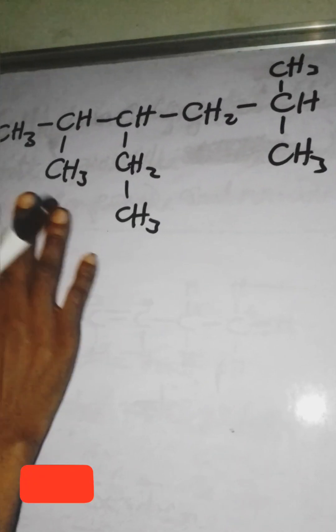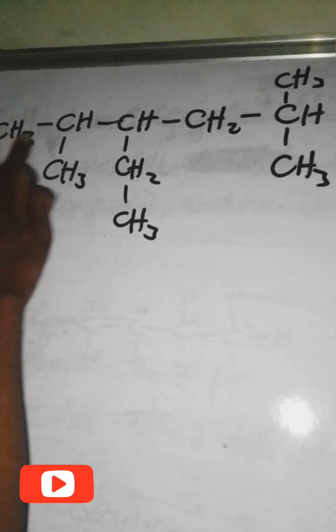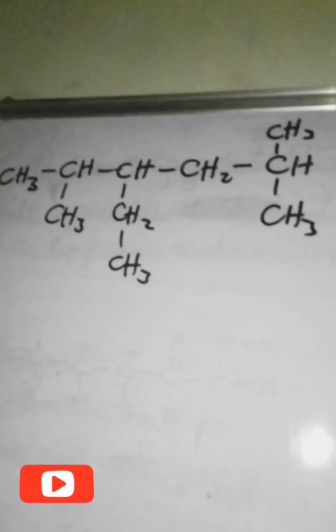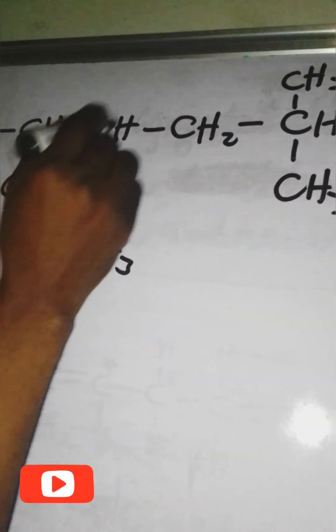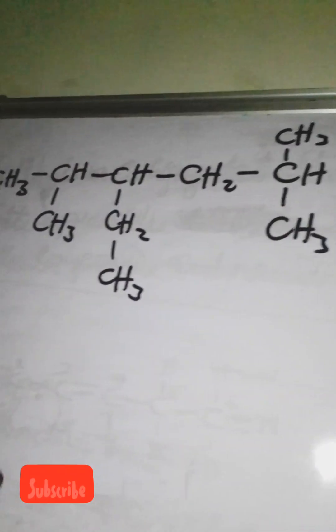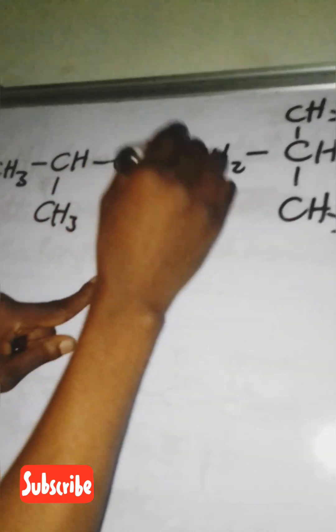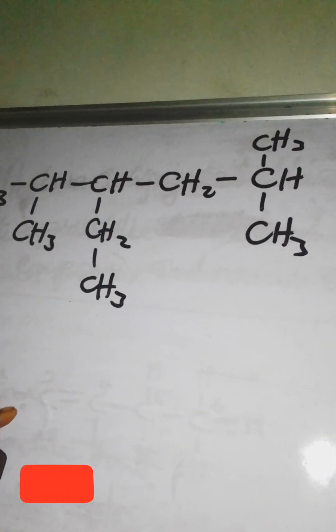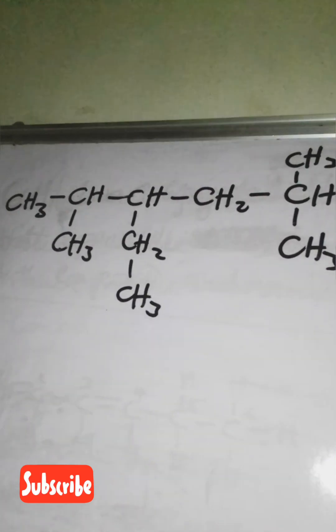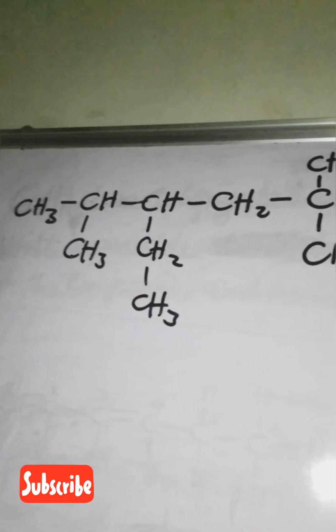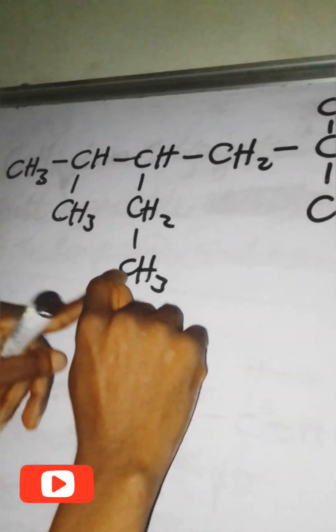As a rule of nomenclature, what you need to do is find the longest chain. There are many possible chains here. Counting along different routes, you get one, two, three, four, five, six — so we get six carbons in multiple possible paths.